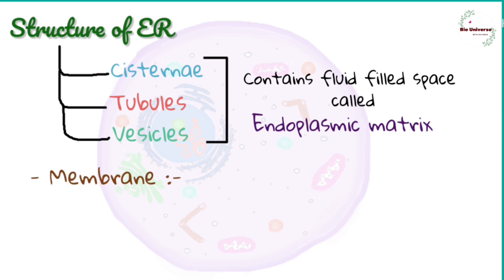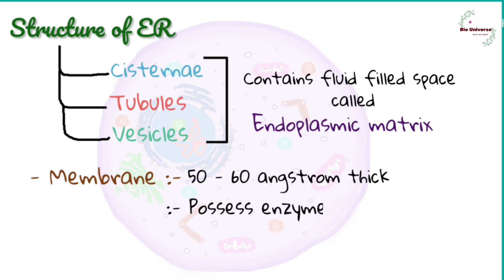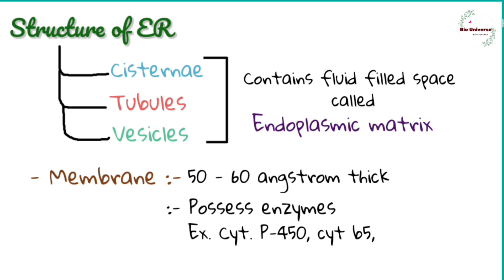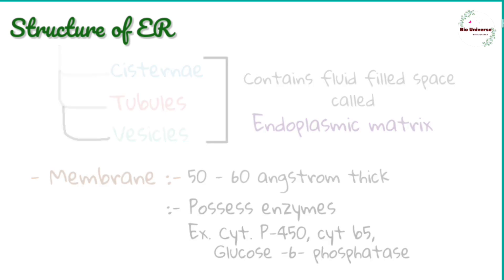Membranes of the endoplasmic reticulum are 50 to 60 angstroms thick. These membranes possess enzymes like cytochrome P-450, cytochrome B5, glucose-6-phosphatase, and nucleoside diphosphatase.